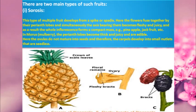In sorosis, the fruit develops from a spike or spadix. All the flowers fuse together by their perianth lobes, and the axis bearing them becomes fleshy and juicy. As a result, the whole inflorescence forms a compact mass and forms a fruit. This is seen in pineapple — with its fleshy bracts — and in mulberry.